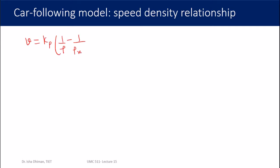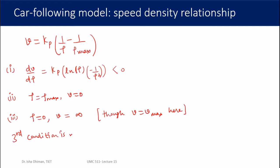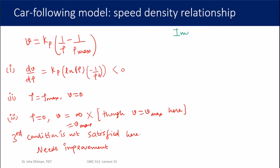Let's check whether this satisfies the three conditions. First, it should be a decreasing function: dv/dρ should be negative — this is true. Second condition is satisfied. Third condition: if ρ = 0, v should equal v_max, but here v turns out to be infinity. So the third condition is violated and the speed-density relationship needs improvement.